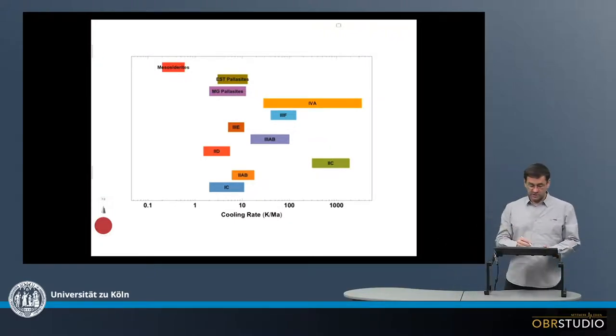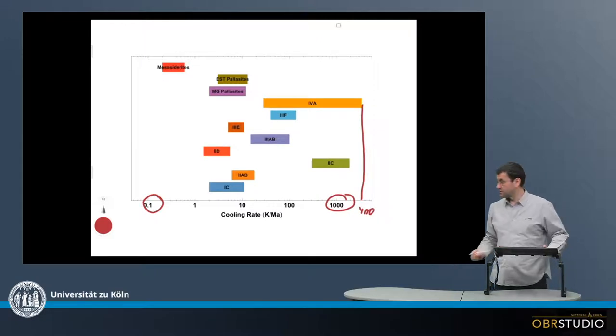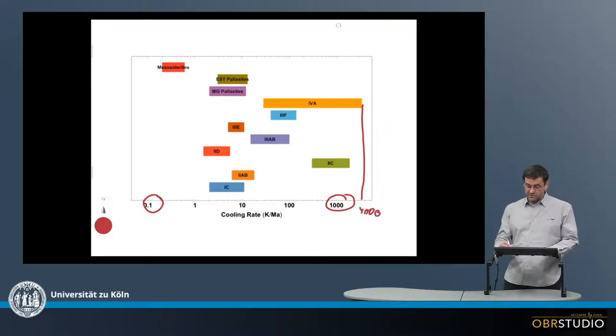Now the cooling rates have a range from about 0.34 Kelvin per million years up to 1,000, or in this case almost 4,000 Kelvin per million years.